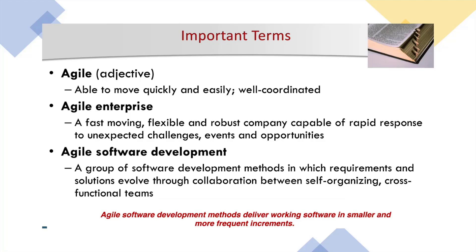What are the important terms in Agile? Agile means the ability to move quickly and easily — it should be fast. Enterprise Agile means the whole company moves towards faster delivery, is able to respond faster, and can overcome unexpected challenges, events, and opportunities. Agile software development means your software is developed as fast and quickly as possible and delivered to the client with high quality and lower failure rates.